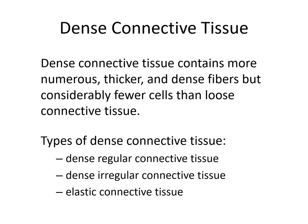Dense connective tissue contains far fewer cells than loose connective tissue, but a lot more fiber. The fibers are thicker and densely packed. We have three types of dense connective tissue: dense regular connective tissue, in which all the fibers run parallel in the same orientation; dense irregular connective tissue, where the fibers run in different directions; and elastic connective tissue, which is stretchier because it contains elastic fibers.